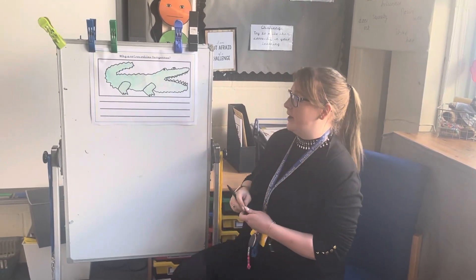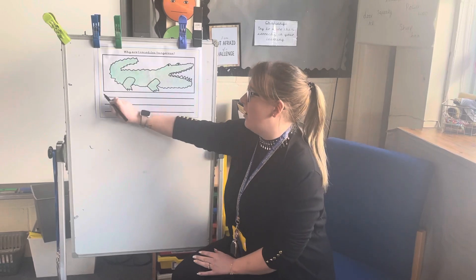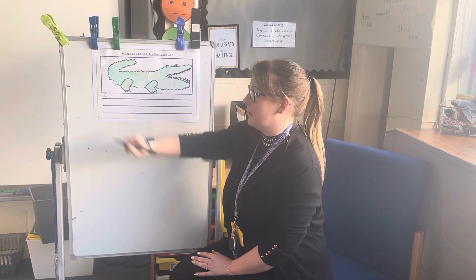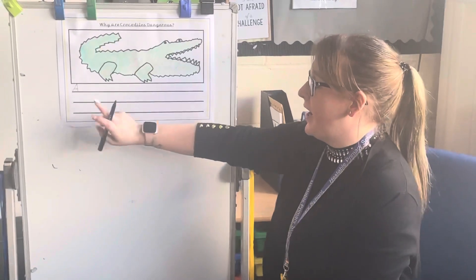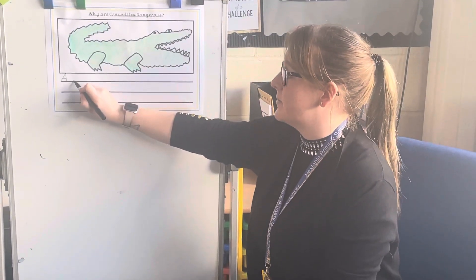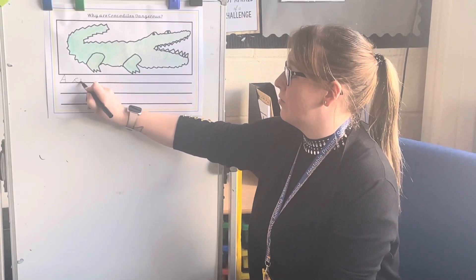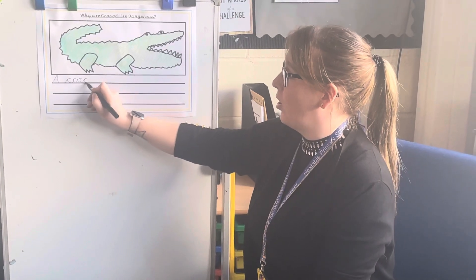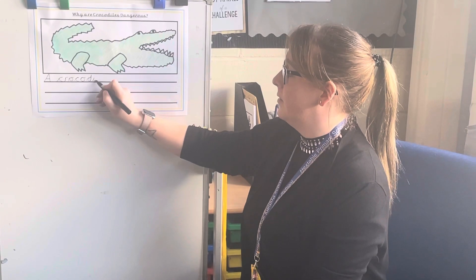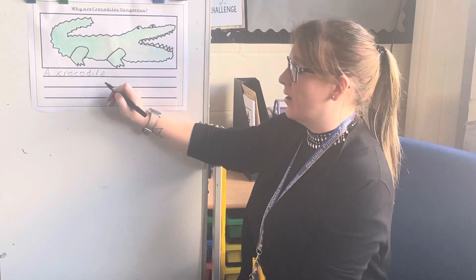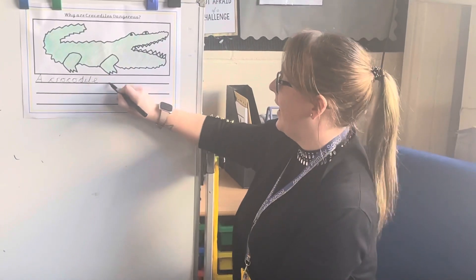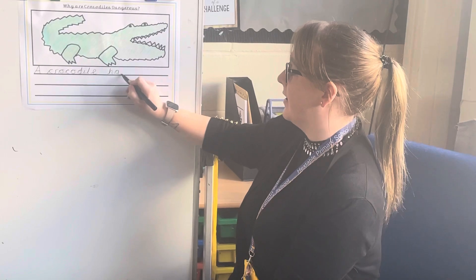Can you help me? Now remember, when we start our sentence we must always start with a capital letter, and my first word is A — so I have done my capital letter. A crocodile — remember we can use the word in the title to help us write this one. A crocodile has. I think you can all sound out 'has' for me: H, A, S — has. A crocodile has.